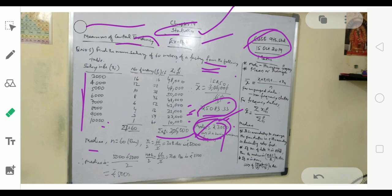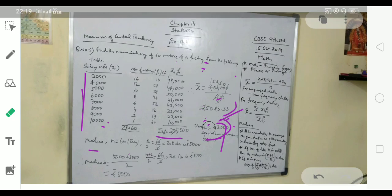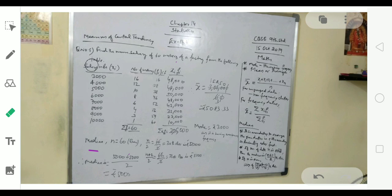When we have found cumulative frequency, and n equals 60, which is an even number, we need two numbers. n by 2 equals 30th observation, which is 5000 only. n plus 2 by 2, that is the 31st observation, is also 5000 only.